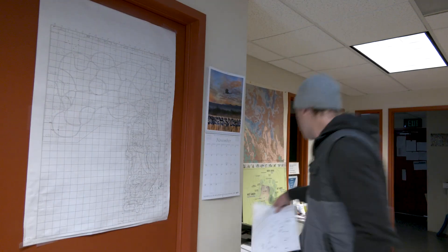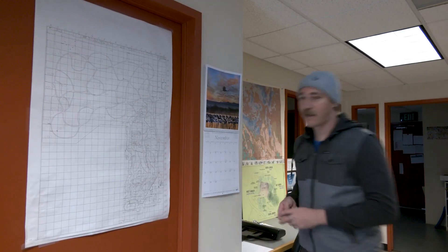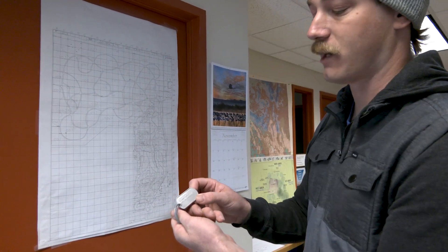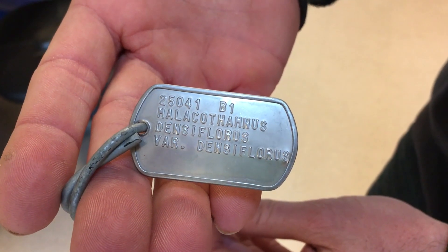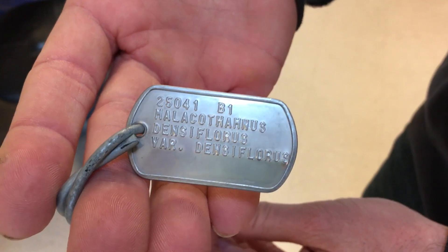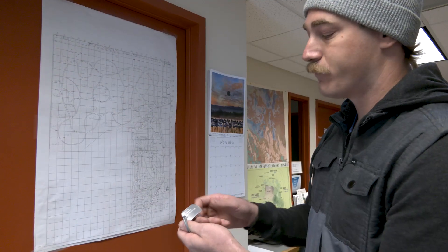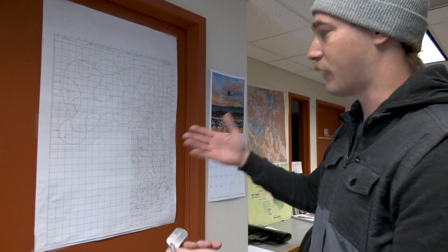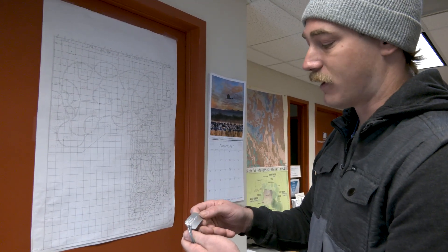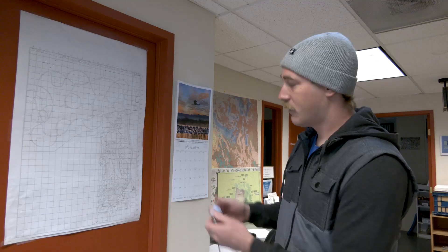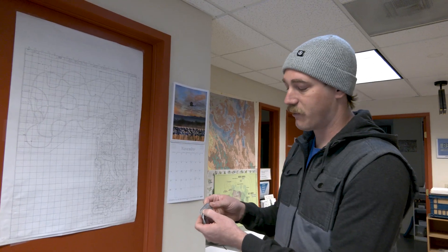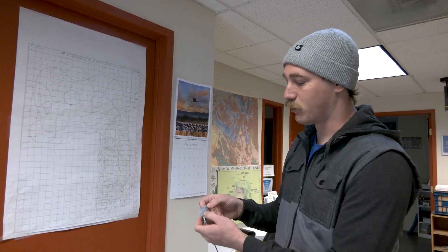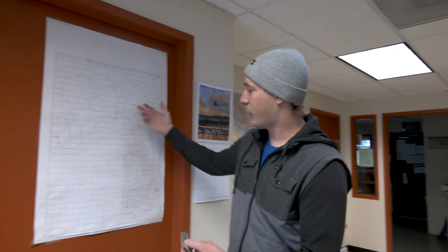Each plant in the garden has a tag and an accession number, which will show us things like who collected it, where it was collected, and the date, and varying things like the taxa in the area. And if you were to punch this information into the database, you would be able to pull up the location of the plant in the garden and all of the collection information for it.